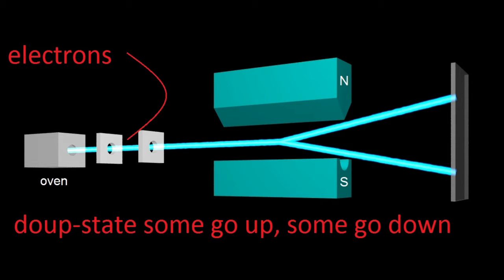— some of them will go up, some of them will go down, and you can never know which ones will go up and which ones will go down. There is no way of knowing ahead of time whether an electron is going to go up or down. And it's not because of our ignorance or because we're not smart enough. Even a supernatural being will not know if an electron in the dope state will go up or down. That information is simply not there.